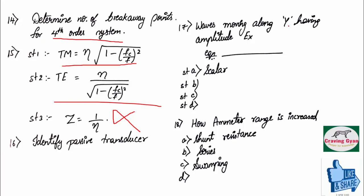And seventeenth question was based on, if the wave is moving along y direction, having an amplitude EX, they have given some equation and they have given some four statements. The first statement was, is it a scalar? And remaining options was also there.